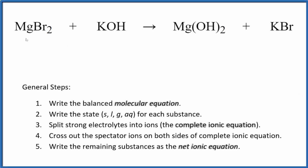Let's write the balanced net ionic equation for MgBr2 plus KOH. This is magnesium bromide plus potassium hydroxide. The first thing we do when we do net ionic equations is we balance the molecular equation. This is the molecular equation.